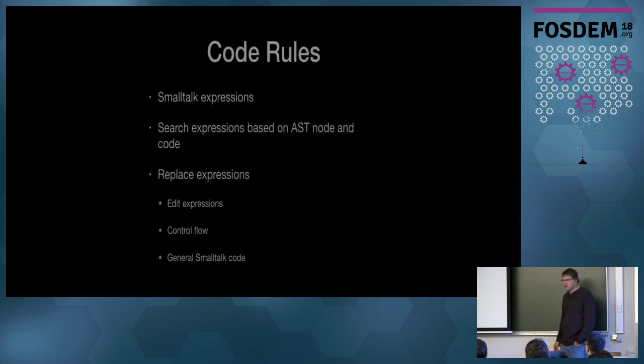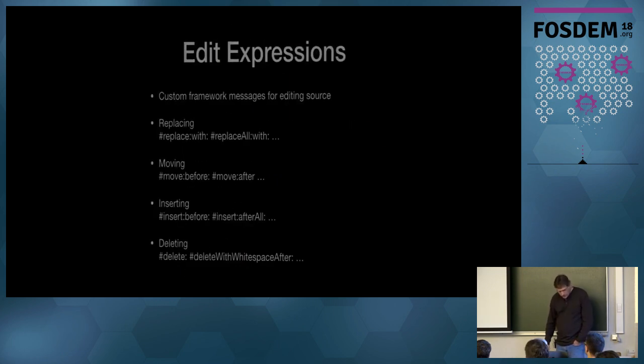So then, the code rules. So, code rules in SMAC are essentially just any small talk expression. For the search part, what we do is we have an AST node that must match, then some code that returns, if it returns true, then it's going to match. Replacement are generally either in three different forms. So, they're like edit expressions, so you can edit the methods, or edit the source code. Control flow, where you tell it which nodes to do, or just generic small talk code where you can load files, do whatever you want.